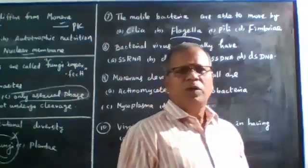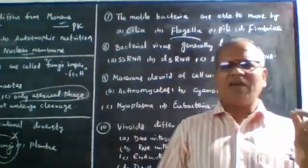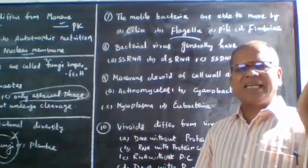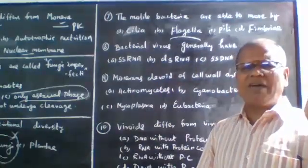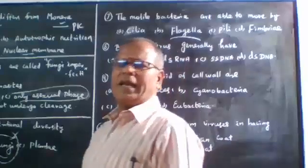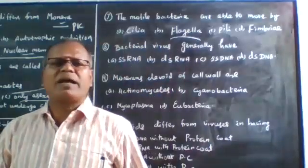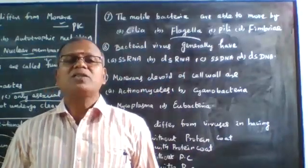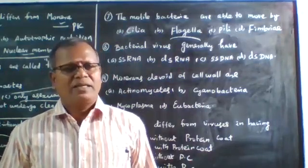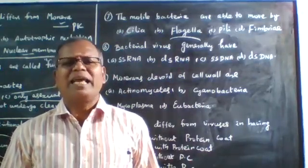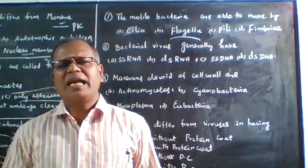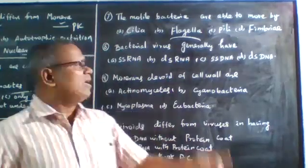Next question: Bacterial virus generally have which genetic material? Options are: SSRNA (single-stranded RNA), DSRNA (double-stranded RNA), SSDNA (single-stranded DNA), or DSDNA (double-stranded DNA).